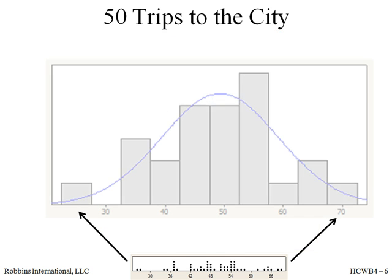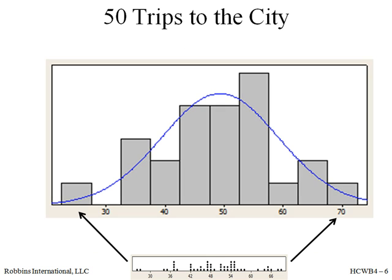Most things in nature will follow what is called the normal distribution, represented by the blue line. An example would be the height of adults — the highest number is in the middle, and then fewer exist as heights get shorter or taller on either end. We will talk a lot about this normal distribution in other modules.